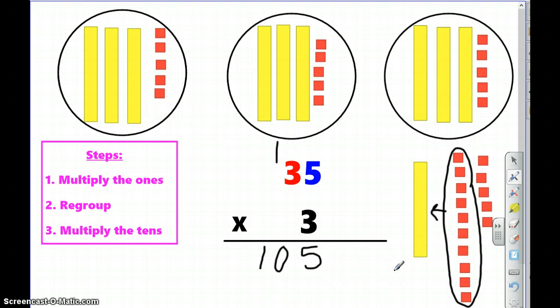And I can check my answer by looking up at my three groups of 35 and counting. So, first I'm going to count my tens. Ten, twenty, thirty, forty, fifty, sixty, seventy, eighty, ninety. Plus ten more, which is a hundred. If I counted these ones, a hundred, 101, 102, 103, 104, 105. So, my answer is correct. Thirty-five times three is 105.